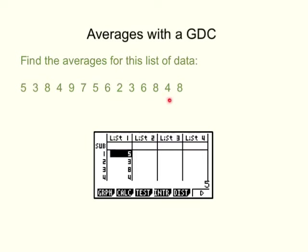We have our list of numbers here, and the first thing we have to do is go into Stats Mode — that's number 2 — and type our data into list number 1. So the data goes down here, scrolling down all of the data. Then we're going to do some calculations with it, so we hit Calc, which is F2, and that brings up a new menu along the bottom.